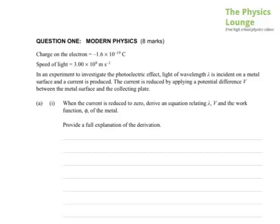So the 2012 Scholarship Physics paper, this is the briefer version. Question 1 on modern physics, we've got the charge and electron speed of light. In an experiment to investigate the photoelectric effect, light of wavelength lambda is incident on a metal surface and a current is produced. The current is reduced by applying a potential difference V between the metal surface and the collecting plate.